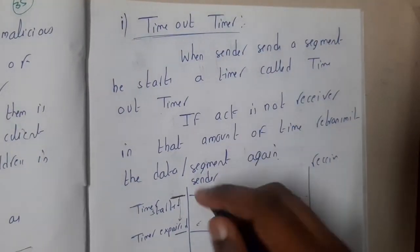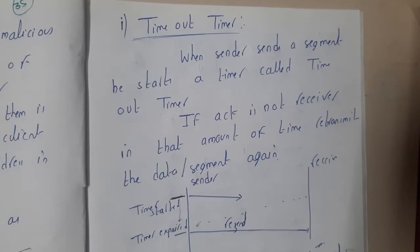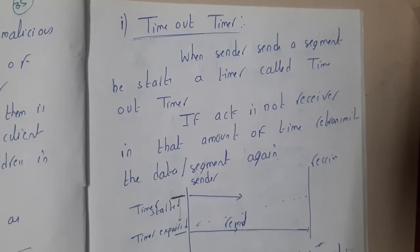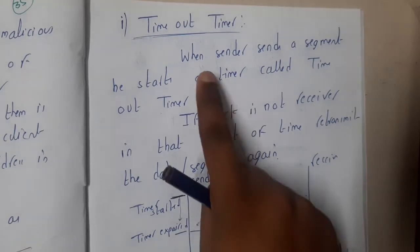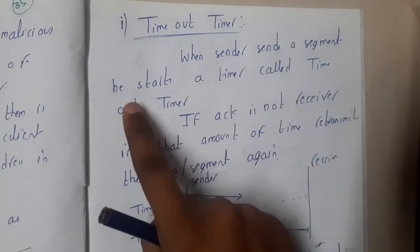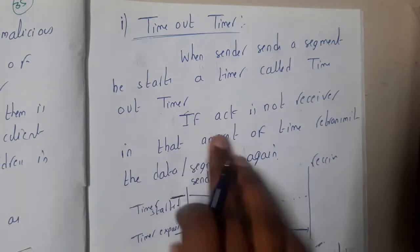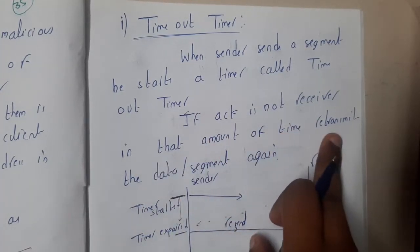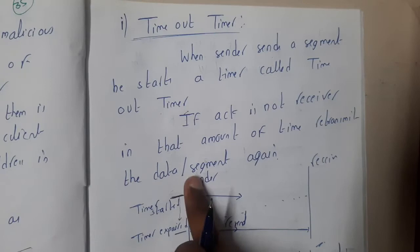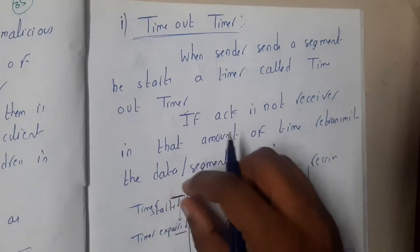There is a specific method to calculate this timer value, which we will discuss in the next lecture. Formally: when the sender sends a segment, it starts a timeout timer. If the acknowledgement is not received within that time, it retransmits the data segment.